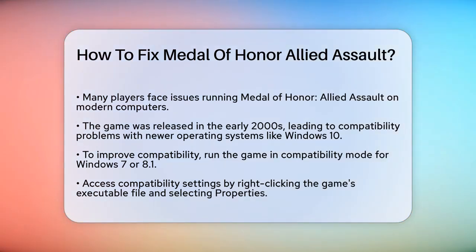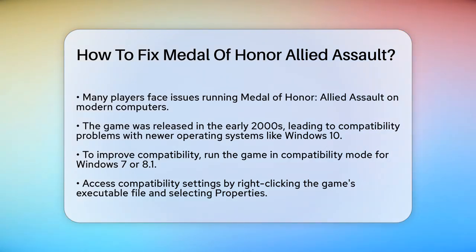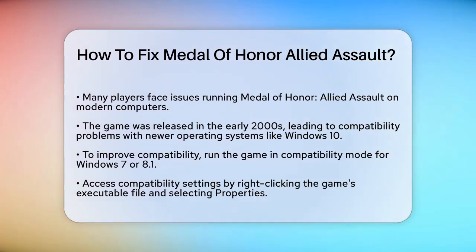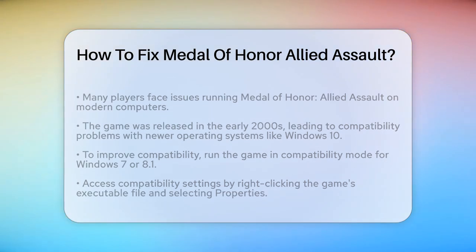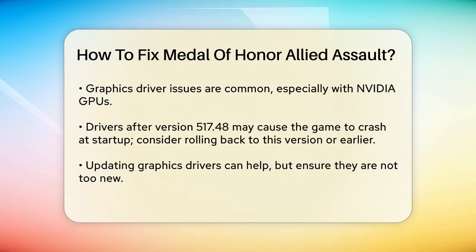First, let's talk about compatibility. Medal of Honor Allied Assault was released back in the early 2000s, so it's not surprising that it doesn't play nicely with newer operating systems like Windows 10. One of the first things you should try is running the game in Compatibility Mode. To do this, find the executable file for the game, right-click it, and select Properties. Then go to the Compatibility tab, check the box that says 'Run this program in Compatibility Mode', and select either Windows 7 or Windows 8.1 from the list. Click OK and then try running the game again.